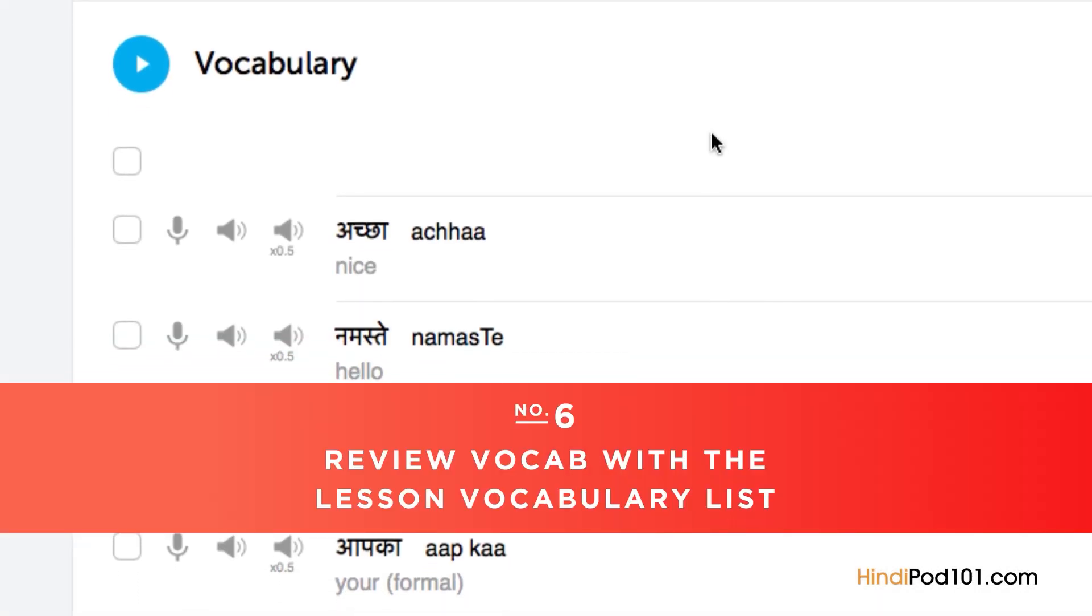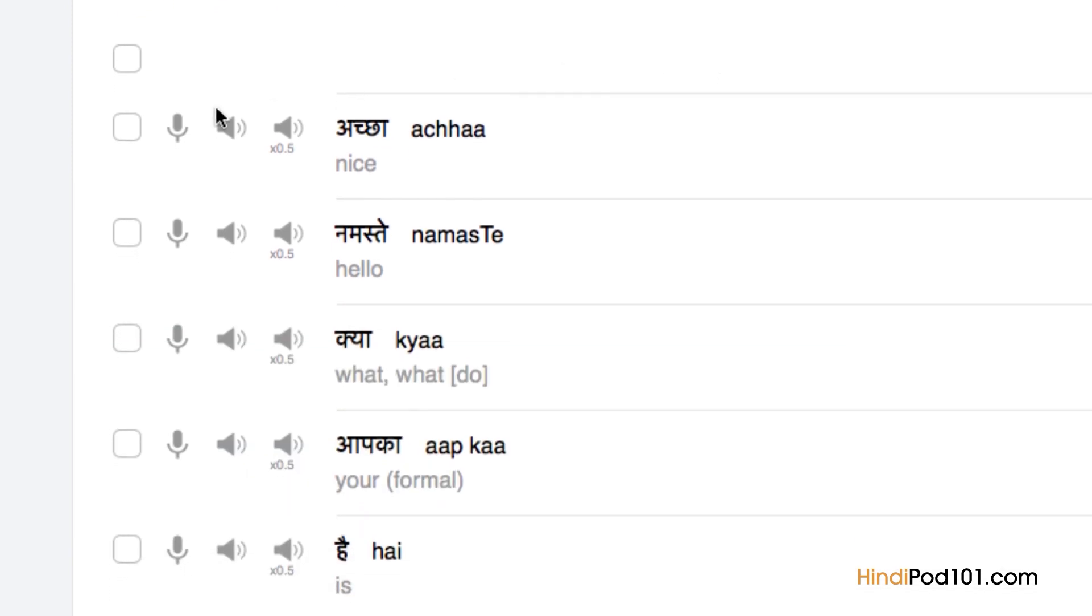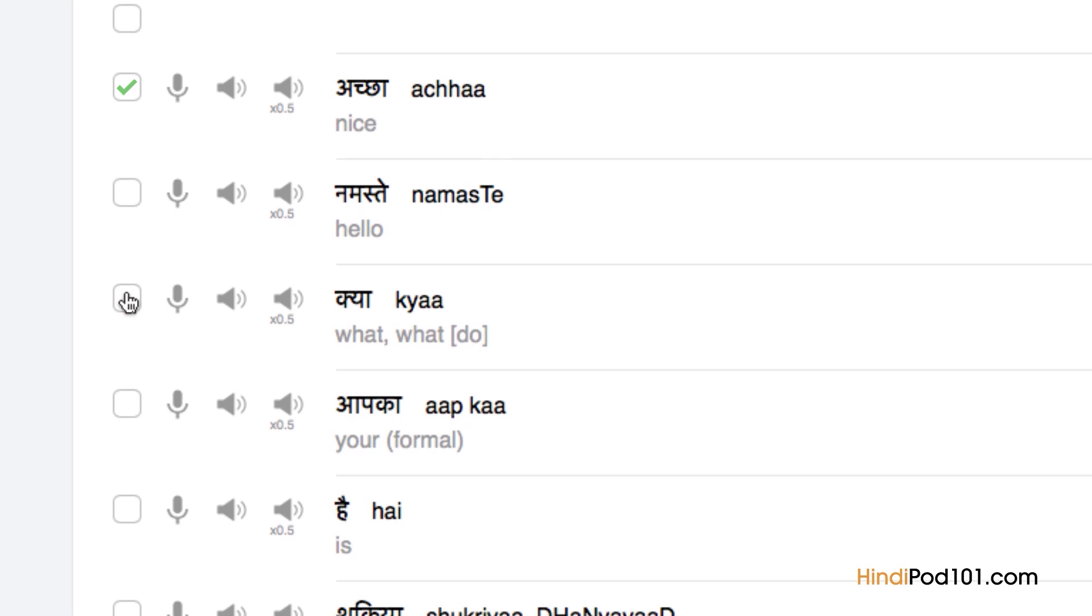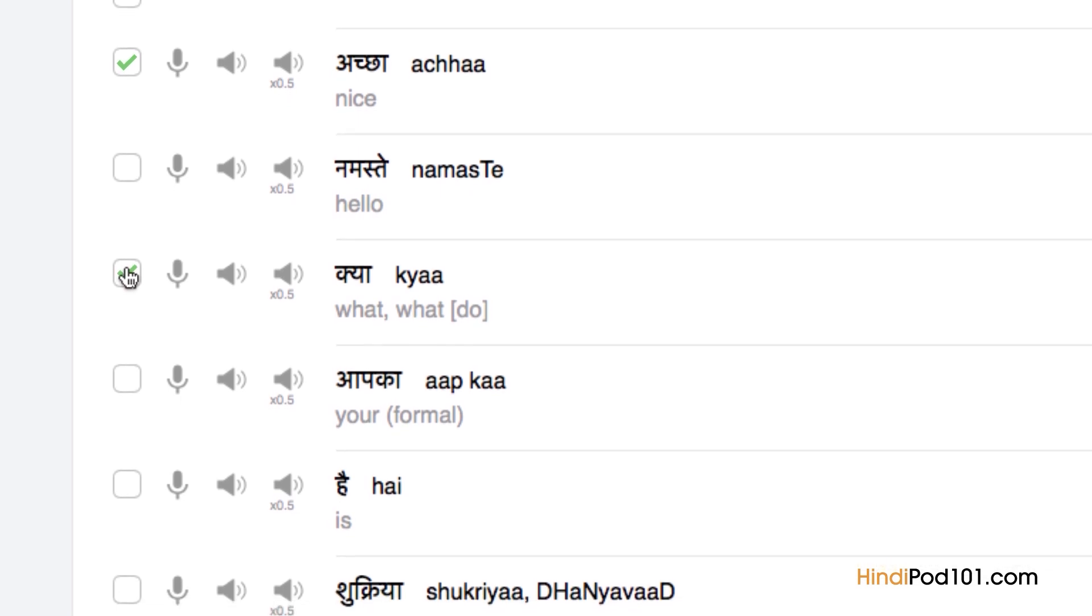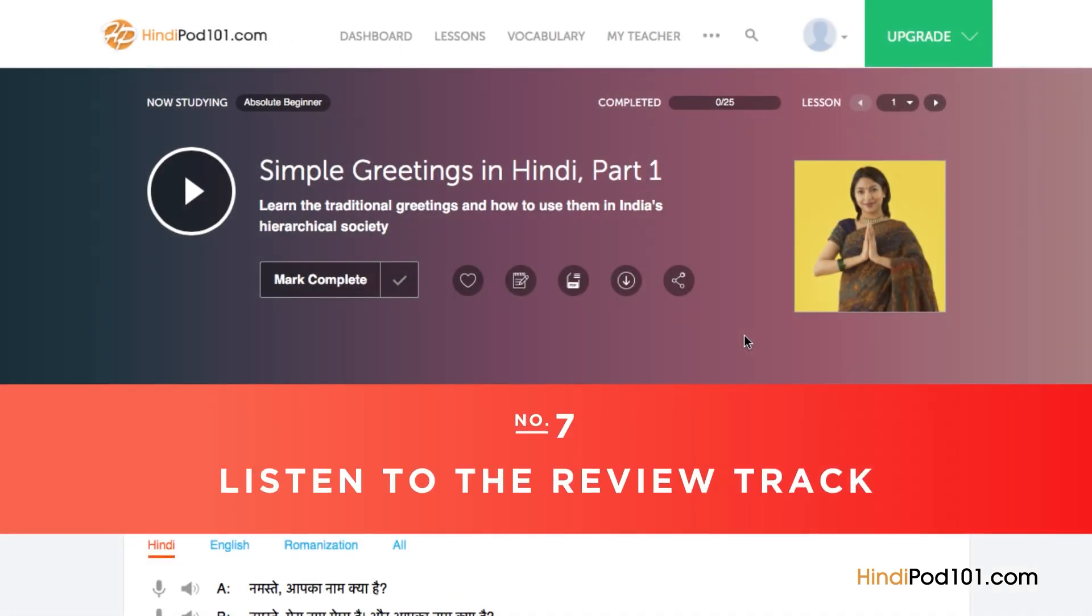Number six, review vocab with the lesson vocabulary list. Vocabulary words are the building blocks of language. You can save vocab words taught in each lesson by clicking on 'add to word bank'. Want to drill the words with smart flashcards instead? Just click on 'add to flashcard deck' to do so.